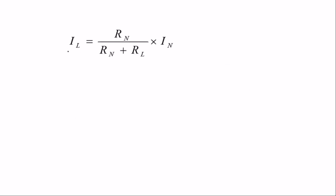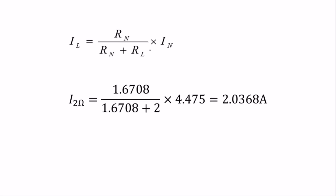To find the current in the 2 ohm resistor, it will be the Norton's resistance over the Norton's resistance plus the resistor you are finding the current in, times the Norton's current.